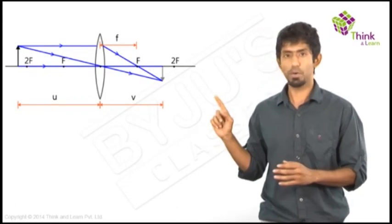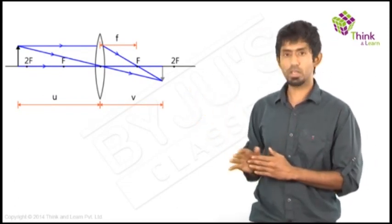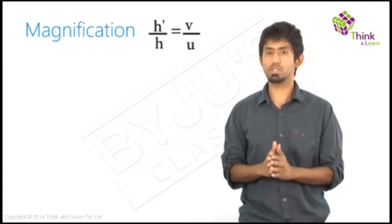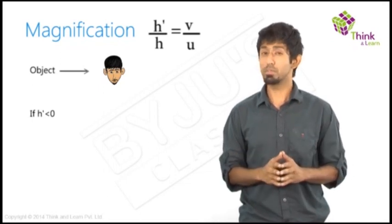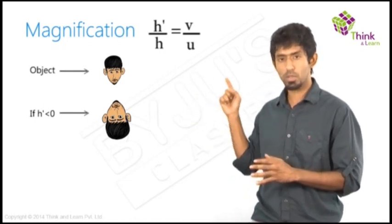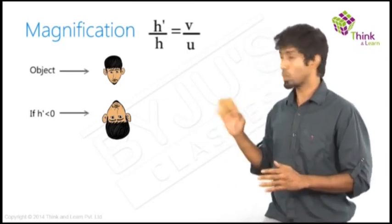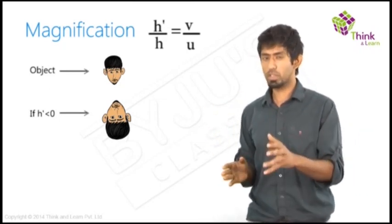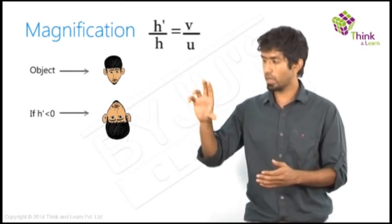So in the case of lenses like we saw, there are a set of similar triangles that are in such a way that H dash by H is directly equal to V by U. Now the first question is, if H dash is negative, what would that mean? The image is inverted, right? Because that's when you measure the distance from the principal axis, it would go down. And we know by our convention, down is negative.